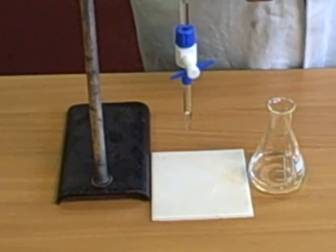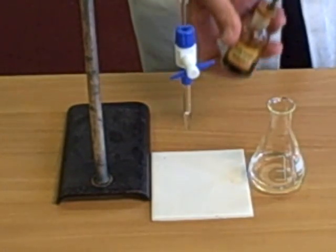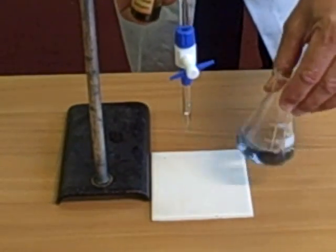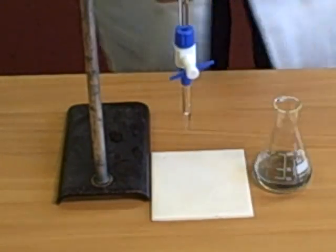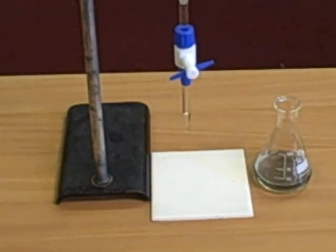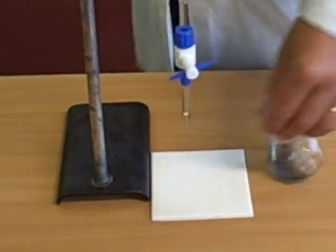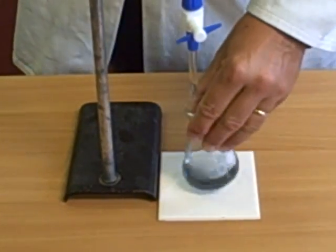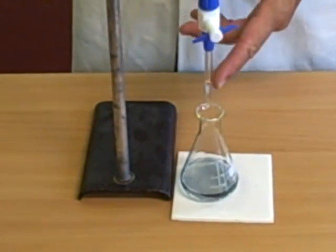But first, so we can see what is happening in here, I'm going to add some indicator. Now, this is a universal indicator. I add three or four drops of that, and I get a nice blue colour. Different indicators give different colours. Now, what I do is, we'll lift this to a proper height.